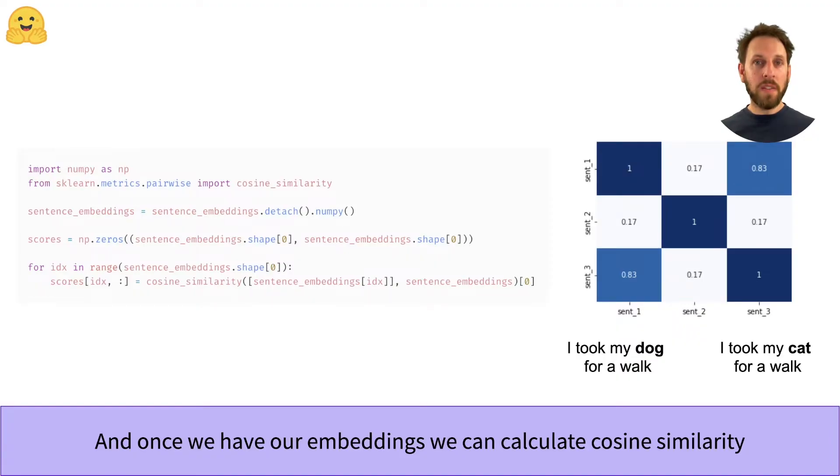And once we have our sentence embeddings, we can compute the cosine similarity for each pair of vectors. In this example, we use the function from scikit-learn, and you can see that the sentence, I took my dog for a walk, has indeed a strong overlap with I took my cat for a walk. Hooray, we've done it.